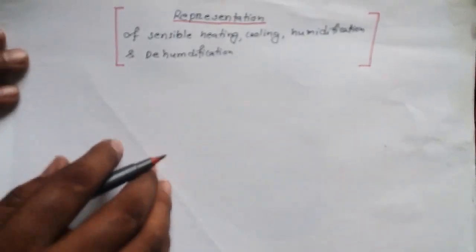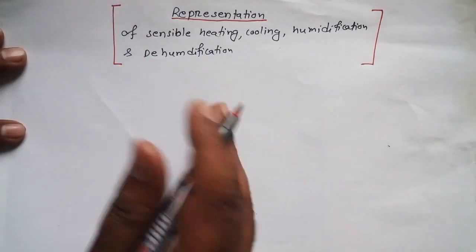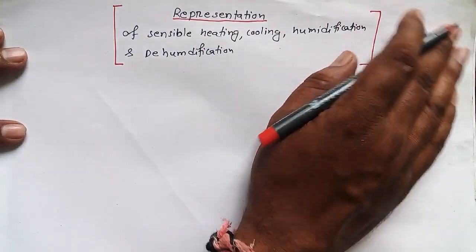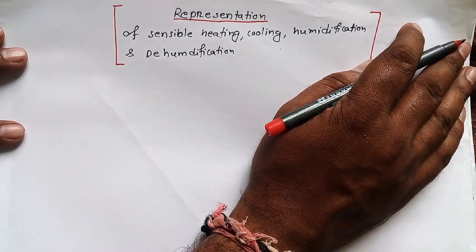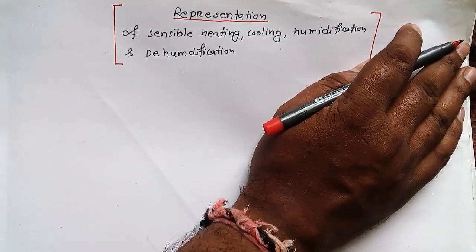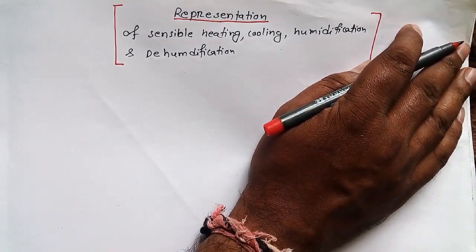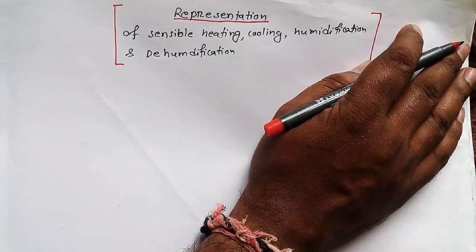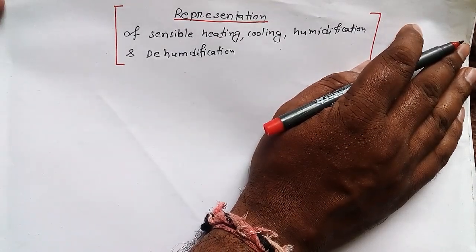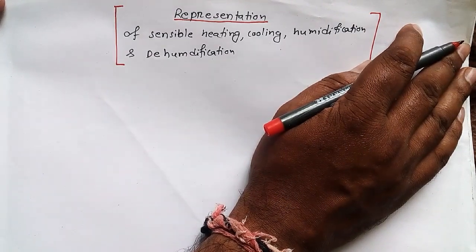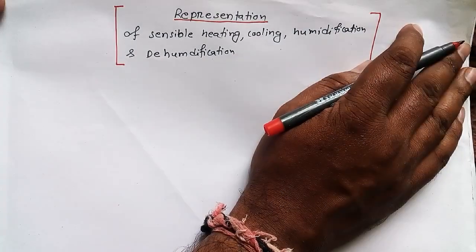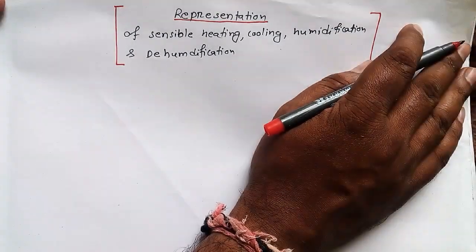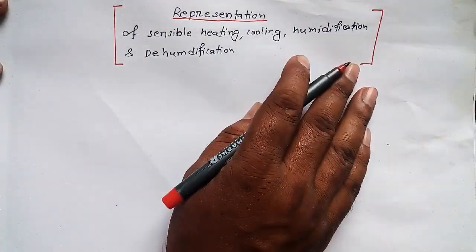Basically what we are going to do, we are going to represent all these on the psychometric chart. Let me share with you why we do such a thing. Basically what happens, we cannot get pure humidification or dehumidification in our real life. That's why what we do, we include sensible heating as well as sensible cooling to get the best out of it. I mean to represent it in a much better way.